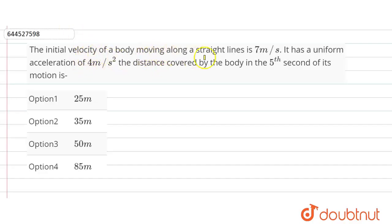The initial velocity of a body moving along a straight line is 7 meter per second. It has uniform acceleration 4 meter per second square. The distance covered by the body in fifth second of its motion. Okay, so here u initial...